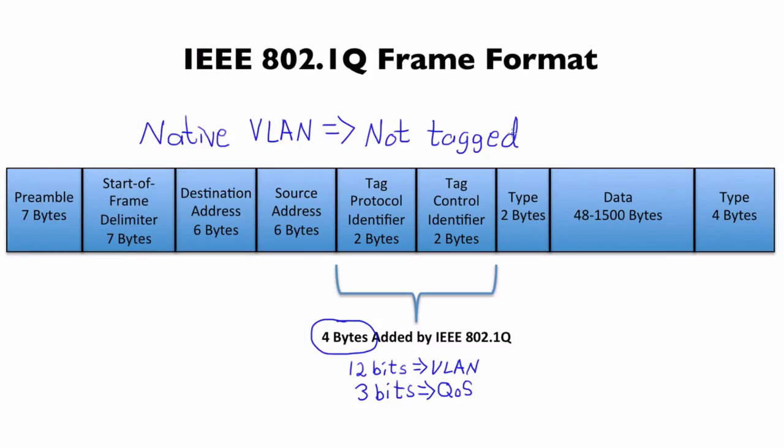All of the other VLANs are tagged. And when we configure our trunk we can specify what VLAN is the native VLAN.